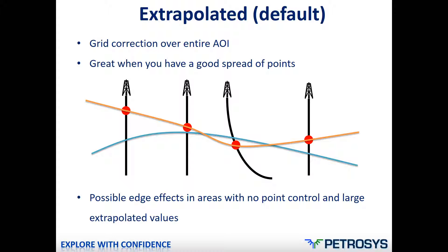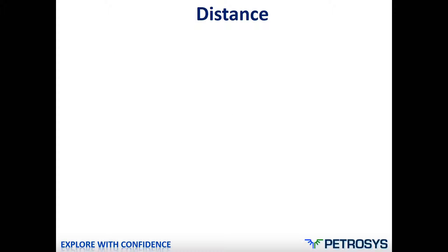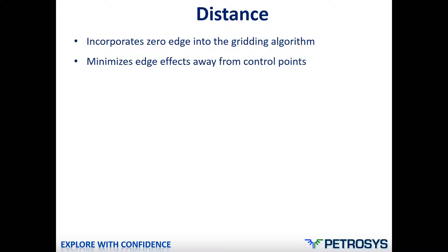If this still doesn't work and the grid doesn't look correct, you can try the next method available: the distance method. The distance method incorporates a zero edge into the gridding algorithm, and this helps to minimize the effects away from control points - the edge effects.